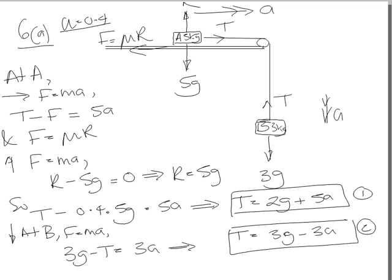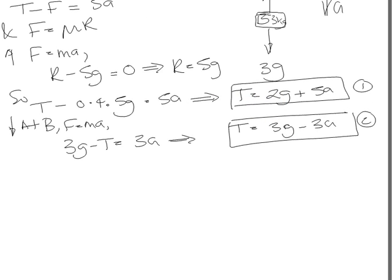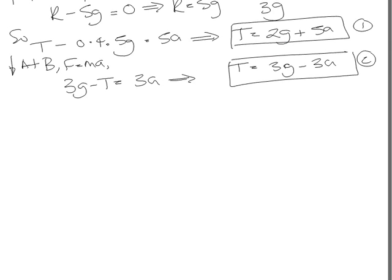So we can work out the acceleration and we can work out the tension. So let's let them equal one another. So we've got these two equations. So what does that give us then? It gives us 1 equal to 2. We get 2g plus 5a equals 3g minus 3a.